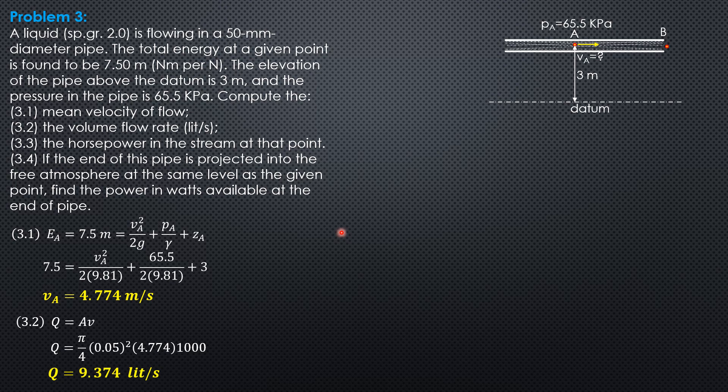The horsepower in the stream at that point: HP_A = Qγ × E_A / 746, where E_A = 7.5 m. So HP_A = (0.009374 m³/s)(2×9810 N/m³)(7.5 m) / 746.